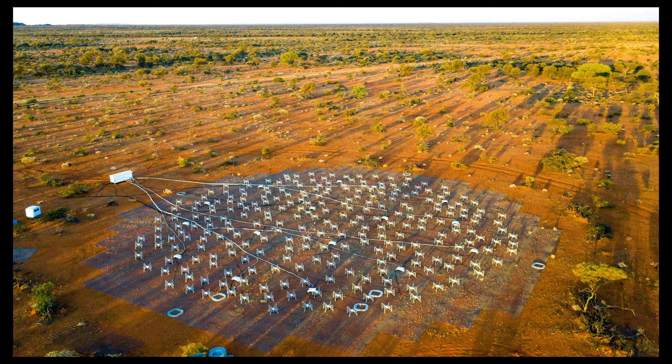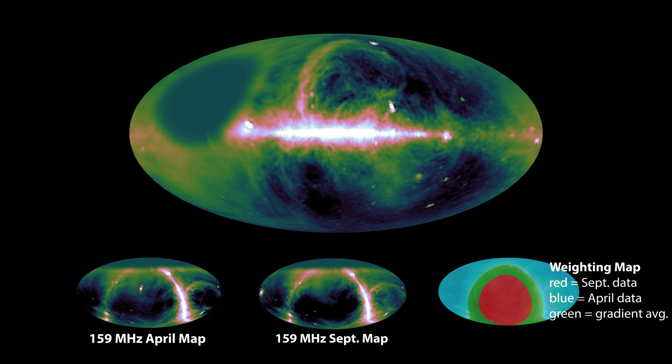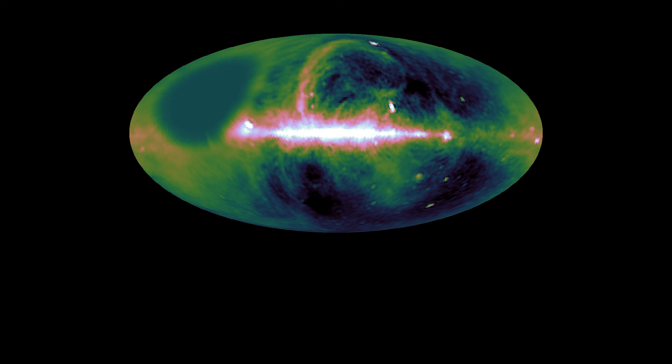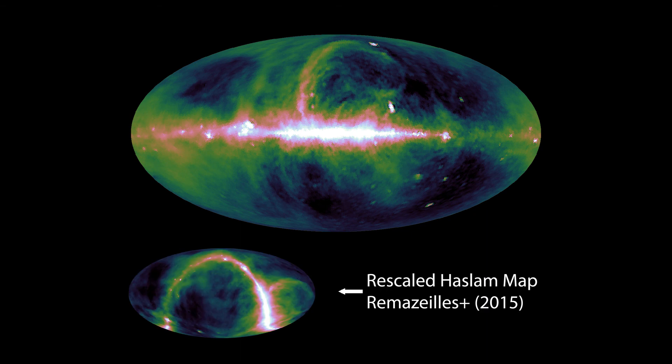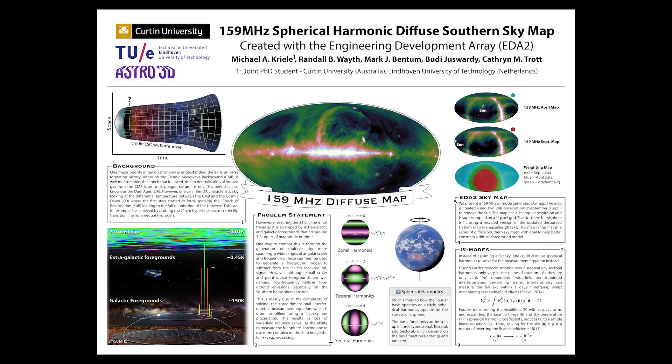Using this method with the Engineering Development Array tool, the wide-field radio telescope in Western Australia, we presented a 159 MHz M-mode generated sky map. This map is created with two 24-hour observations to remove the sun from our sky image. The map has a 3-degree angular resolution and is supersampled on a 1-degree pixel grid. The northern hemisphere is fit using a rescaled version of the updated de-sourced Haslam map. This map is the first in a series of EDA-generated diffuse southern sky maps, with the goal to help better constrain the diffuse foreground model, and will be made publicly available once published.